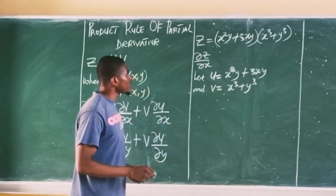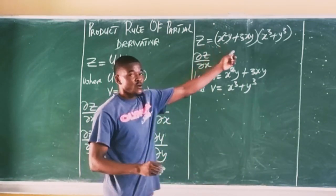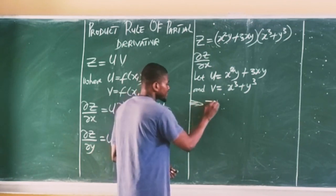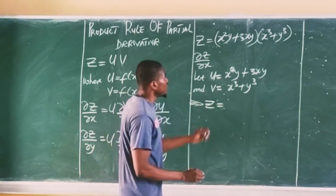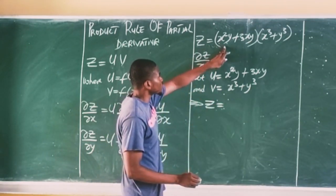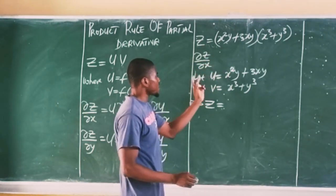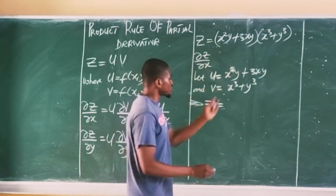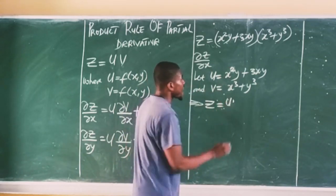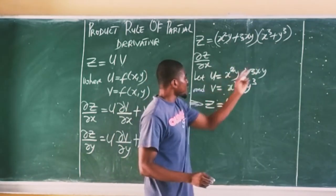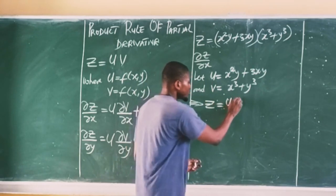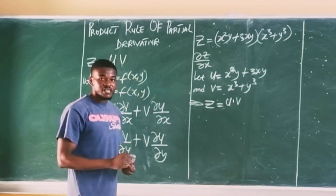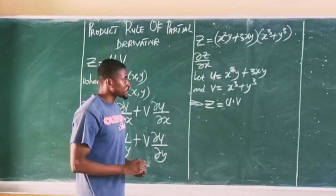So now this whole function can be written as: Z is equal to U times V, where in place of X squared Y plus 3XY we write U, and in place of X cubed plus Y cubed we write V. You notice that this is now a product rule, Z is equal to U times V.